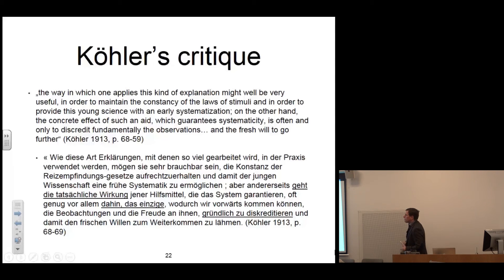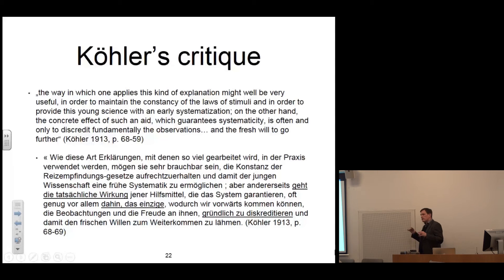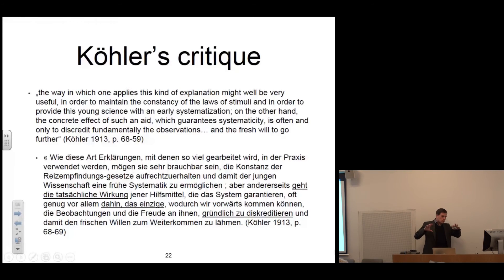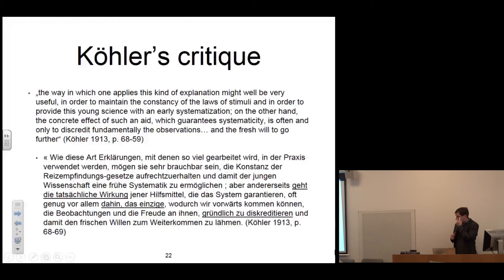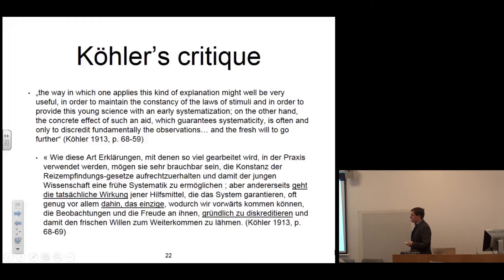This is basically what Wolfgang Köhler described as a typical case of what he called, in a pejorative way, the constancy hypothesis. Köhler comments on Benussi by saying: 'The way in which one applies this kind of explanation might well be very useful in order to maintain the constancy of the laws of stimuli and to provide this young science with an early systematization. On the other hand, the concrete effect of such an aid is often only to discredit fundamentally the observations and the fresh will to go further.' Strictly speaking, Köhler sees in Benussi's strategy simply a theoretical construct to build a very complex theory that explains a phenomenon but actually puts aside the observations.